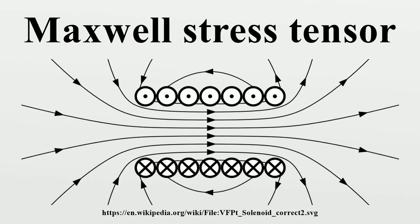In simple situations, such as a point charge moving freely in a homogeneous magnetic field, it is easy to calculate the forces on the charge from the Lorentz force law. When the situation becomes more complicated, this ordinary procedure can become impossibly difficult, with equations spanning multiple lines. It is therefore convenient to collect many of these terms in the Maxwell stress tensor, and to use tensor arithmetic to find the answer to the problem at hand.